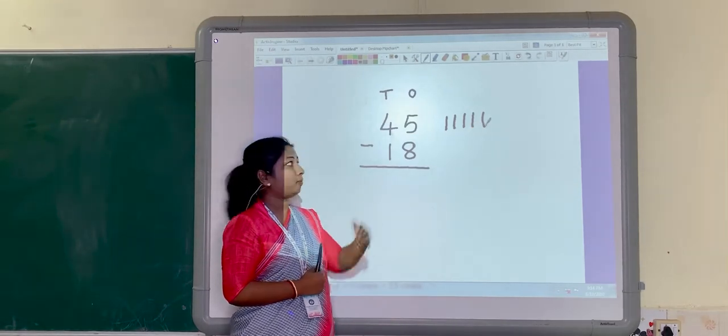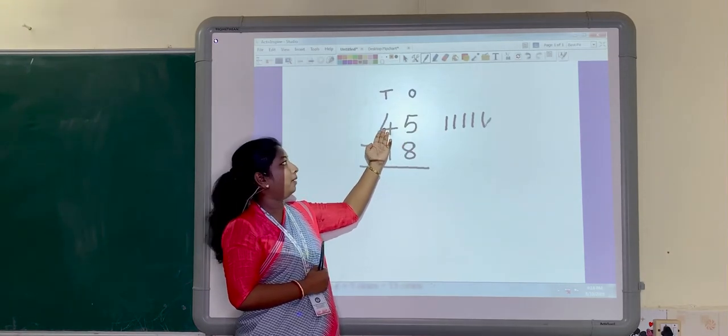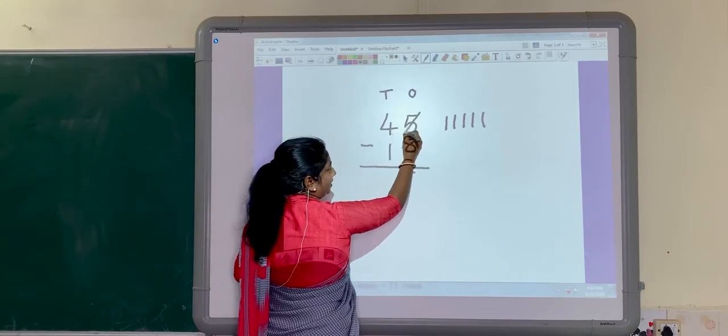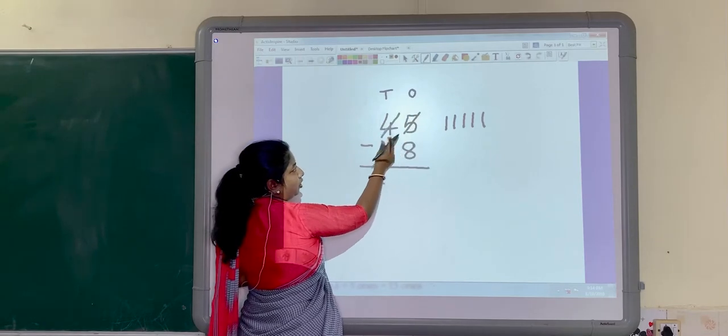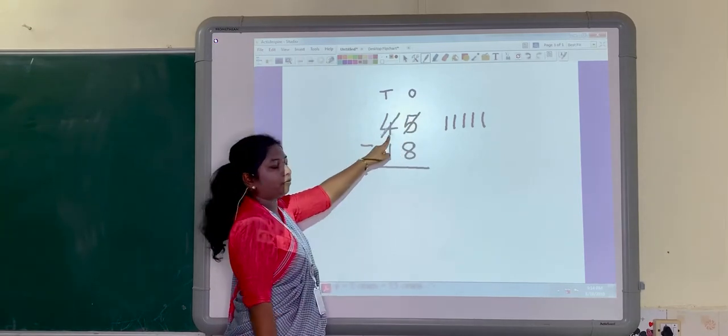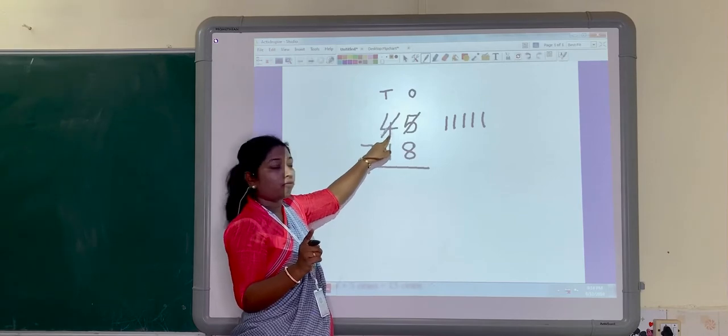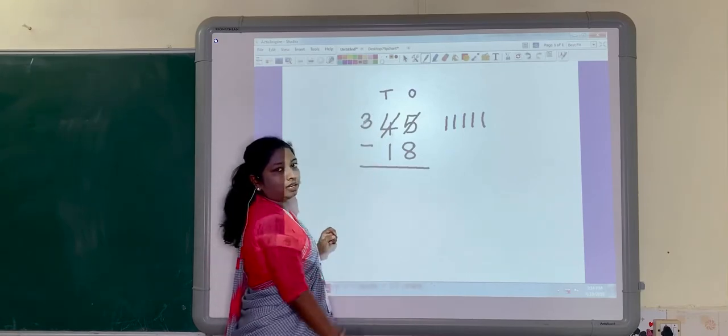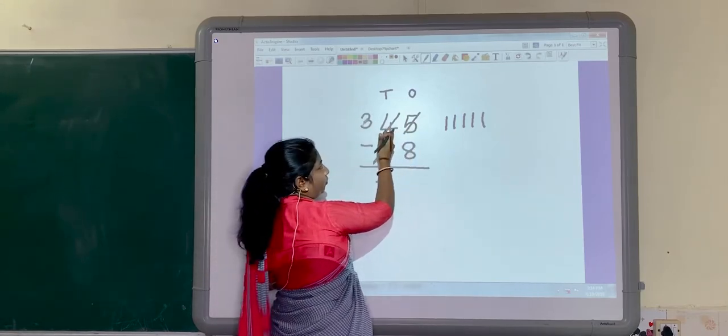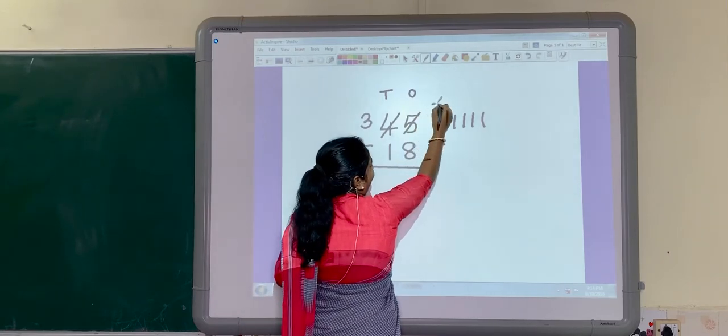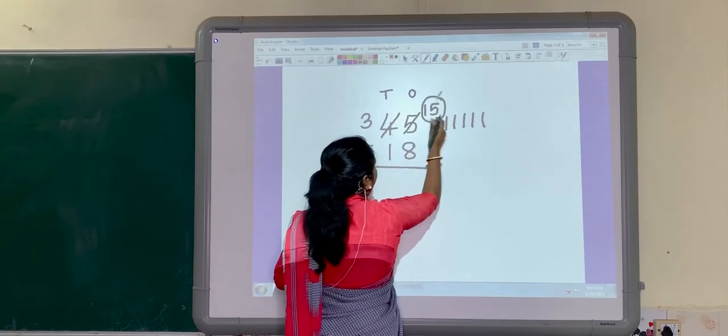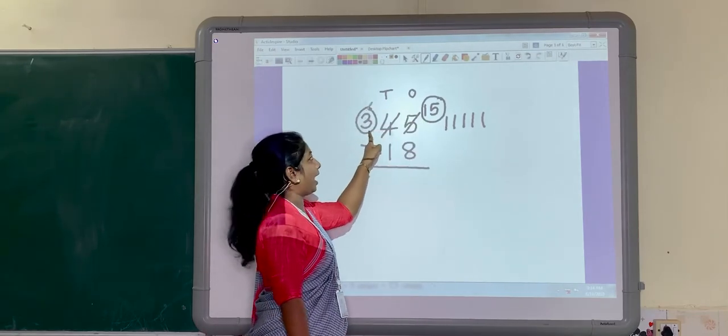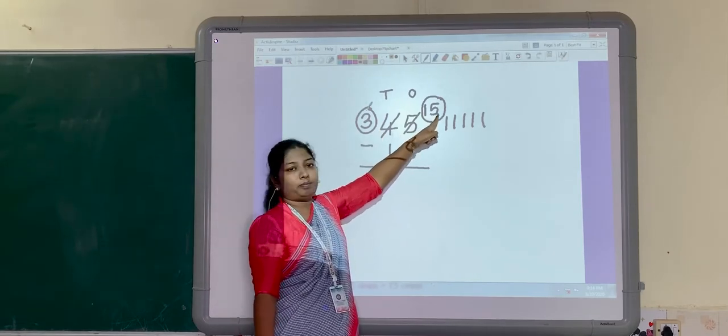So, what we have to do? We have to borrow. Borrow means we have to take a number from this number. Now see, we have to cut this. From this 4, we are taking 1 number. So, what will remain now? If we cut 1 from 4, here it will remain 3. And here, when 4 is giving 1 to 5, it will become like this: 15 and here 3. Because we have taken 1 from 4, and 1 is given to this number, it becomes 15.